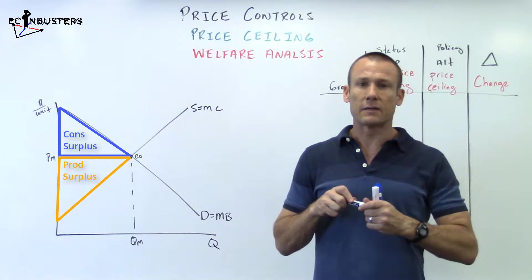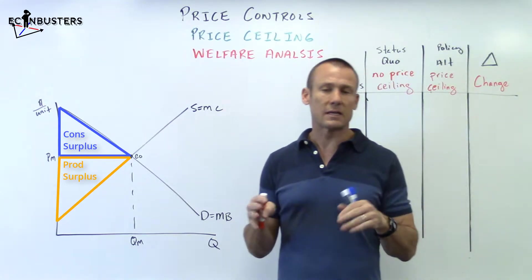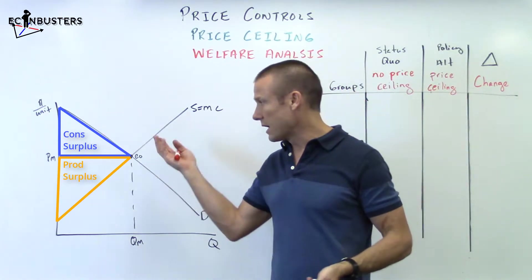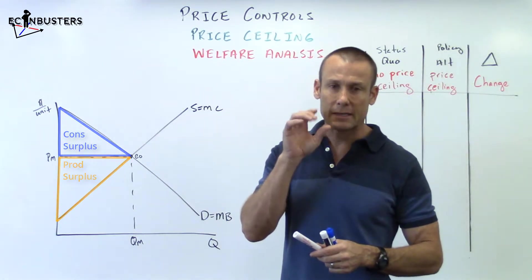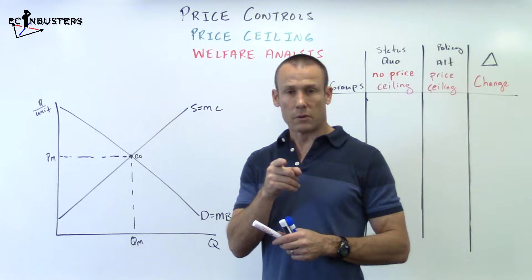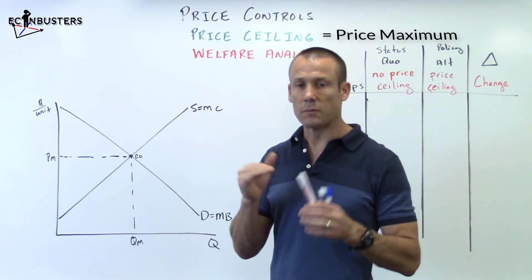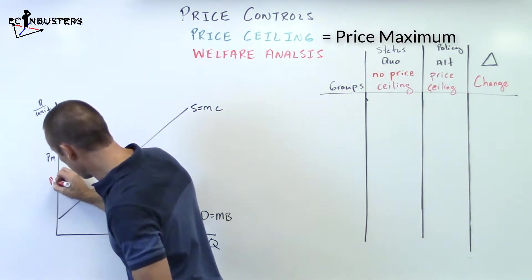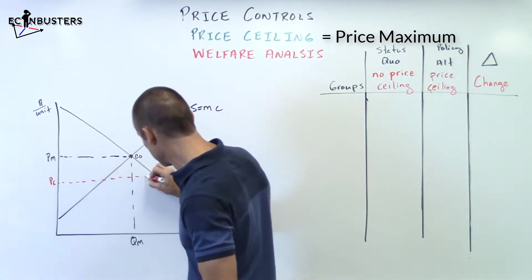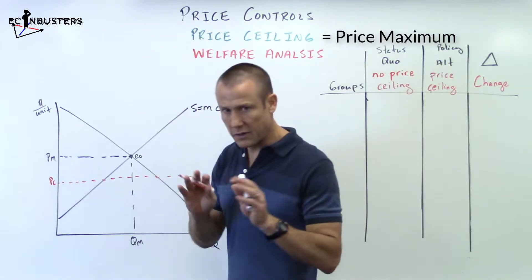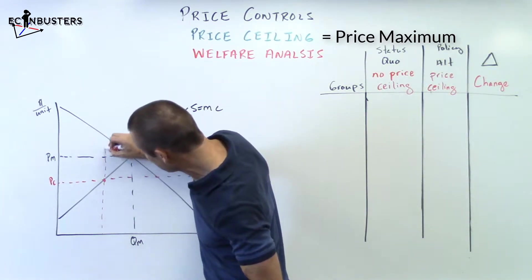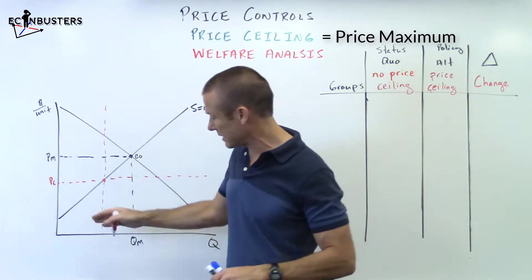That is no price ceiling. Now we're going to put in a price ceiling. And the only type of price ceiling that really makes sense is to put in a binding one, because if you put in a non-binding one, you get the same result as the market left alone. So a binding price ceiling. Remember, a price ceiling is a price maximum. If it's going to be a binding price ceiling, that means the price ceiling is below the market price. So price ceiling. Going to draw that over.